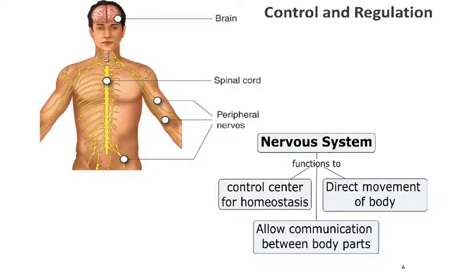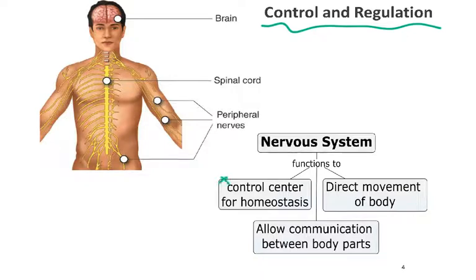Once we move to organ systems, we're going to start by looking at the nervous system, which is involved in control and regulation of other body systems. As we've already learned, it's a control center for homeostasis. Your skeletal muscles move because your nervous system tells them to, and the nervous system also allows for really rapid communication between certain parts of the body.